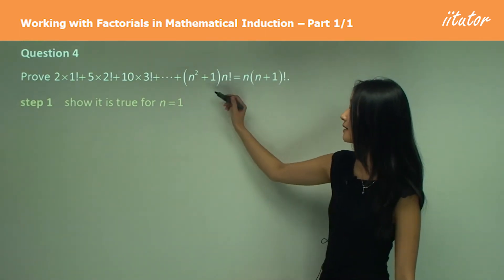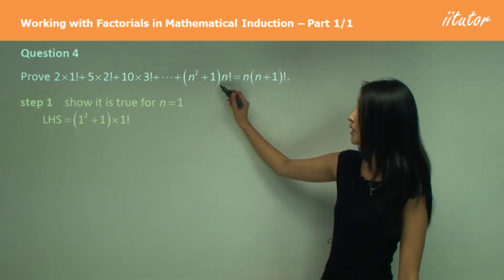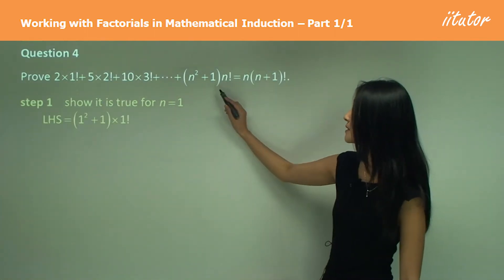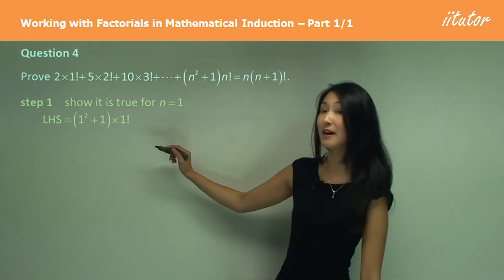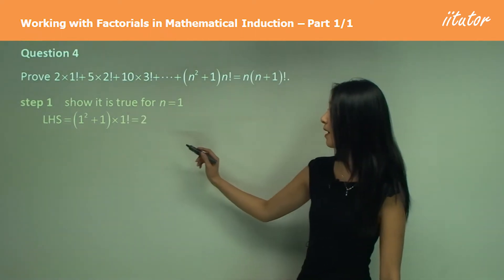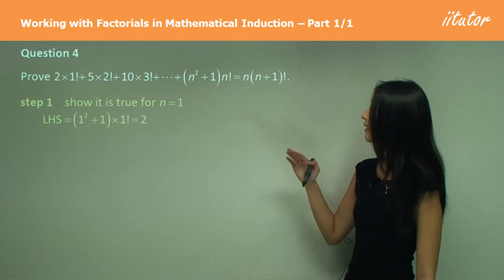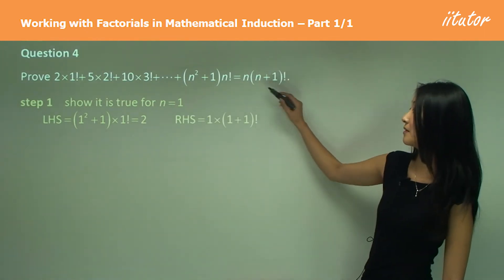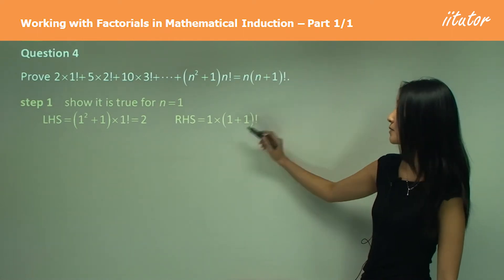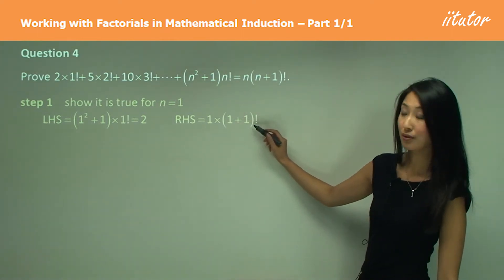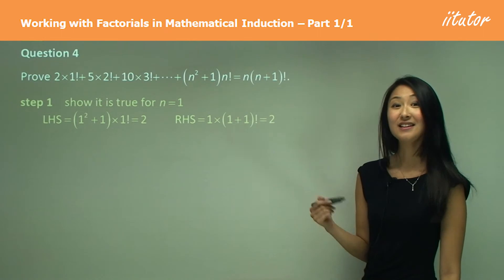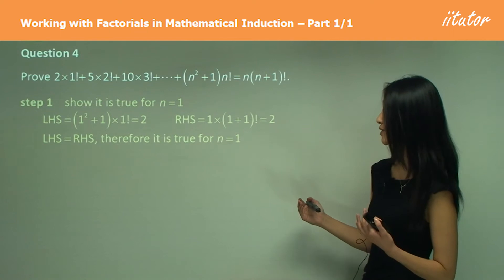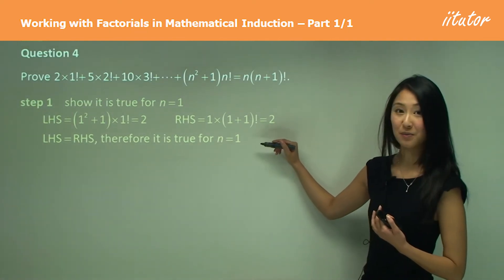We write the left hand side using the general formula and substitute in 1. So we have (1²+1) times 1 factorial, which is 2 times 1 equals 2. Using the right hand side, we have 1 times 2 factorial, which is 1 times 2 equals 2 as well. Since the left hand side equals the right hand side, we can say therefore it is true for N equals 1.